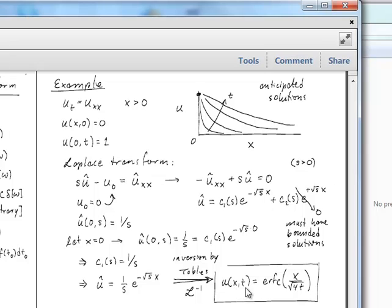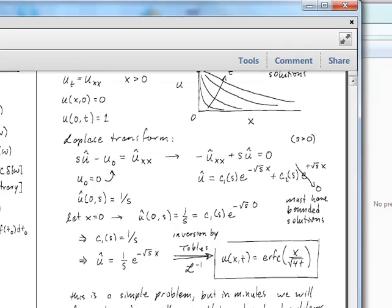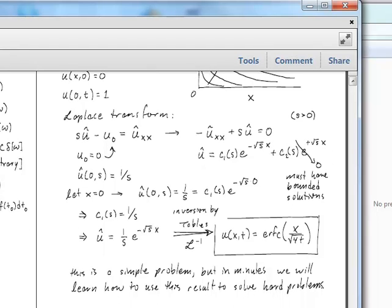And that gives you that u of xt, now we're back in the x time domain, is the error function complement with an argument of x over square root of 4t. That's the usual similarity variable that you probably would have guessed if you were doing this by similarity transformation. Okay, so this is a very simple problem, but you can actually use Laplace transforms to solve much harder kinds of things, things where a similarity transformation would certainly be difficult.